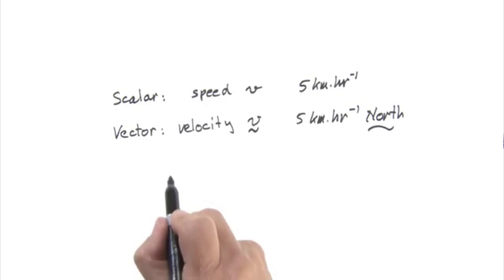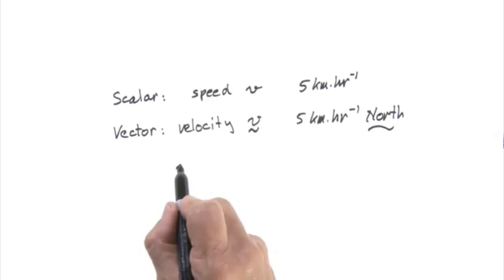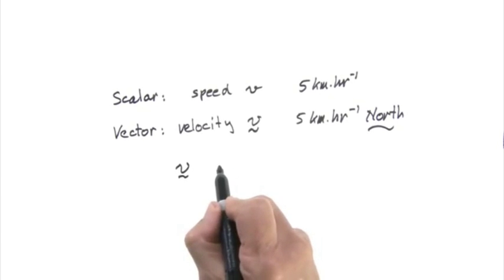Notice the notation. In handwriting, a normal letter V is the speed, which is the scalar. For velocity, I write V with a wiggly line below. That indicates it's a vector.